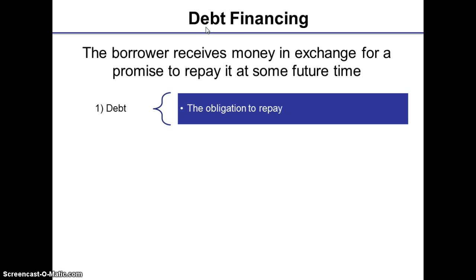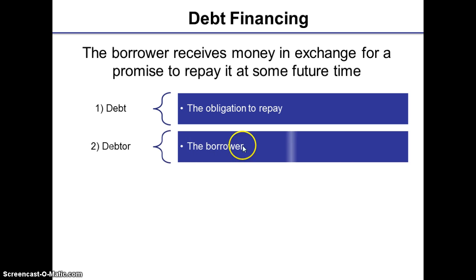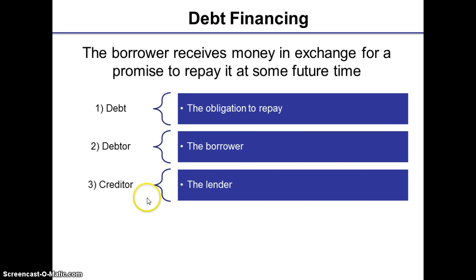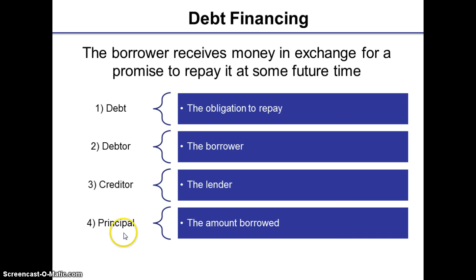Let's first try to understand what is debt financing. Debt financing is where the borrower receives money in exchange for a promise to repay it at some future time, and therefore we can say that debt is an obligation to repay. The borrower is known as the debtor and the lender is known as the creditor. The amount of money which is borrowed is also referred to as the principal amount, and this amount is repaid either at the end of the specified period or it may be repaid at regular intervals during the entire period of the debt.